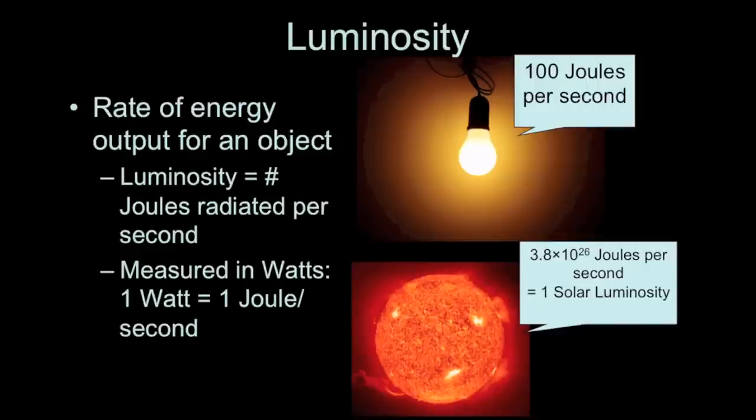You've probably heard of watts because you've installed light bulbs in fixtures before and you've seen that light bulbs have an energy output written on them in watts. For example, a 100 watt light bulb is giving off 100 joules of energy, in this case radiant energy, per second.